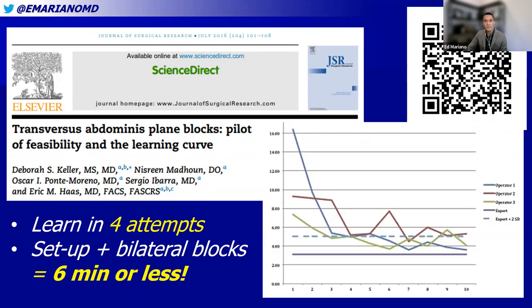Starting with a very basic technique for fascial plane blocks, we have to look at the transversus abdominus plane — or TAP — block. This has been around the longest in clinical practice and has been shown in simulation studies to be relatively easy to learn. In a study published in the Journal of Surgical Simulation, what's important is how quickly someone can identify the fascial plane layers for the TAP block. If you can learn the technique in four attempts and perform bilateral blocks in a simulated model in six minutes or less, this is something every anesthesiologist can potentially learn and incorporate into clinical practice.